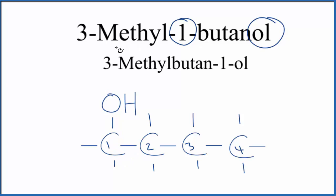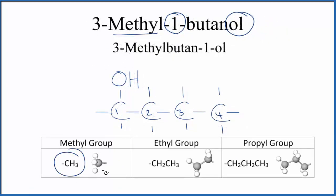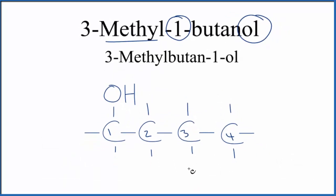Next, we have this methyl group. A methyl group is just CH3. It's a carbon with three hydrogens. So we're going to put a methyl group on the third carbon here. So let's do that. We'll put it down here to give ourselves some more room.